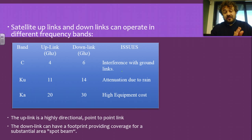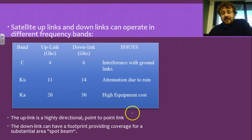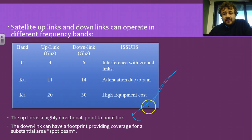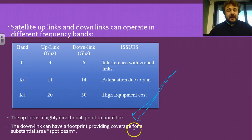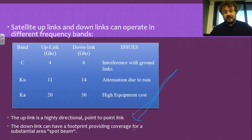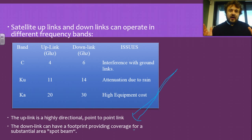Uplink is highly directional — this is why your satellite dish needs to point directly at the satellite, because it sends a focused beam. Whereas when the satellite transmits back, it's a broad footprint. So downlink can have a large footprint, but the uplink is highly directional and needs to be a focused beam. That's why the dish has to point directly at the satellite.